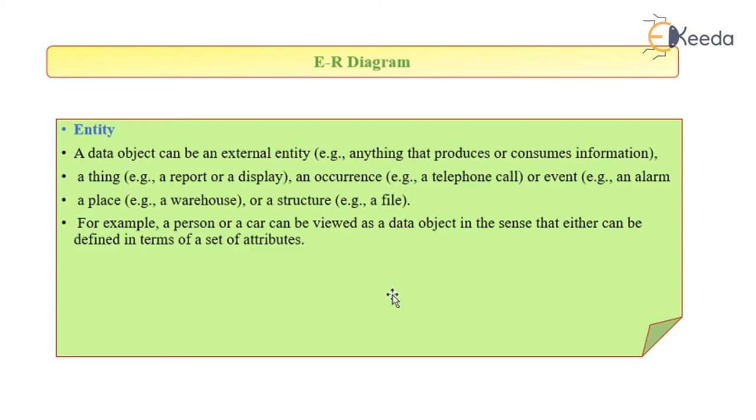What is an entity? A data object can be an external entity, that is anything that produces or consumes information, a thing that is a report or display, an occurrence, an event like an alarm, a place like a warehouse, or a structure. Any of these things could be an entity. So any place, object, thing, occurrence, or event is an entity. A person or a car can be viewed as a data object in the sense that they can be distributed or their behavior can be described.